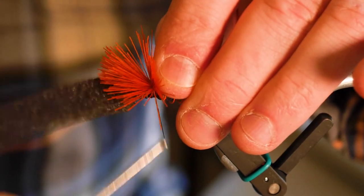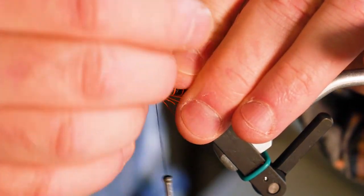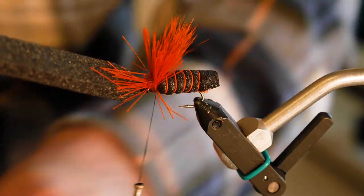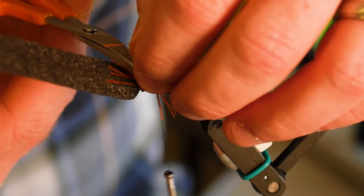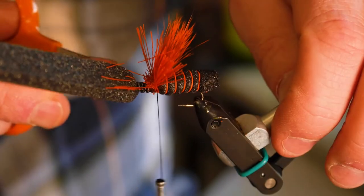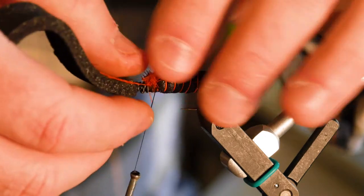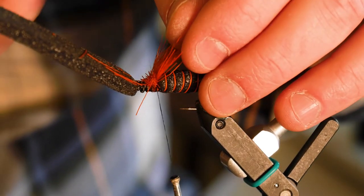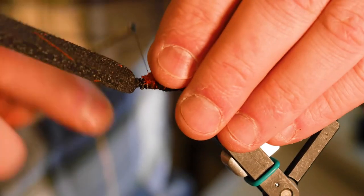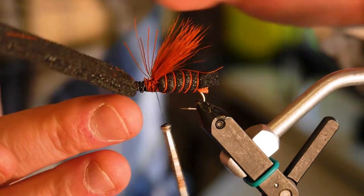You want this about the length of the body. Tie it down. I actually go through the butts a couple times to make sure that it gets a grip on it and then come back up. Cut the butt ends out of your way. Spread that a little bit. All right. We got our wing tied in.